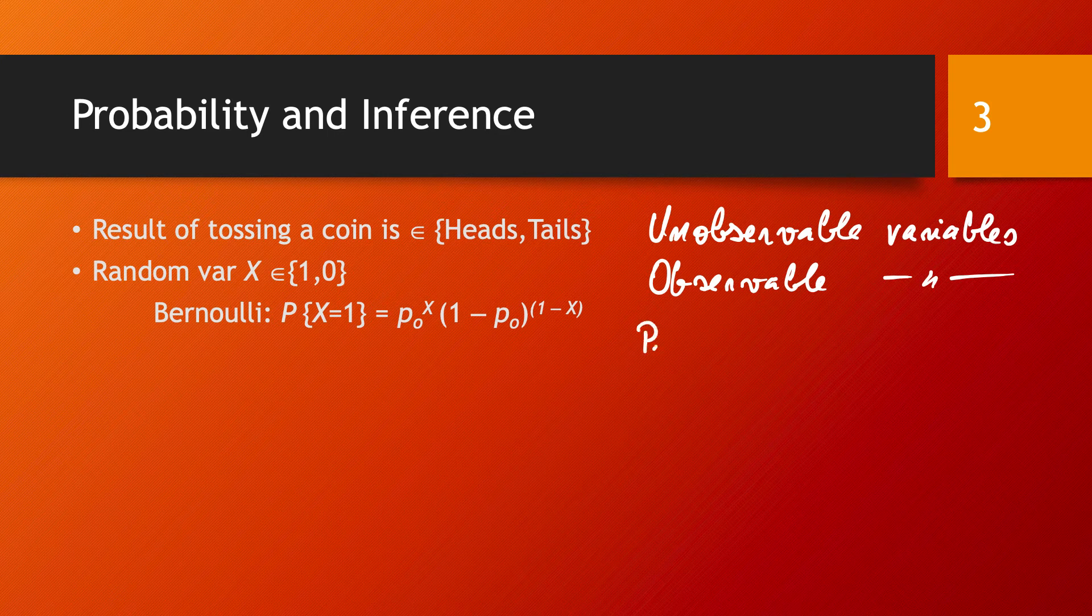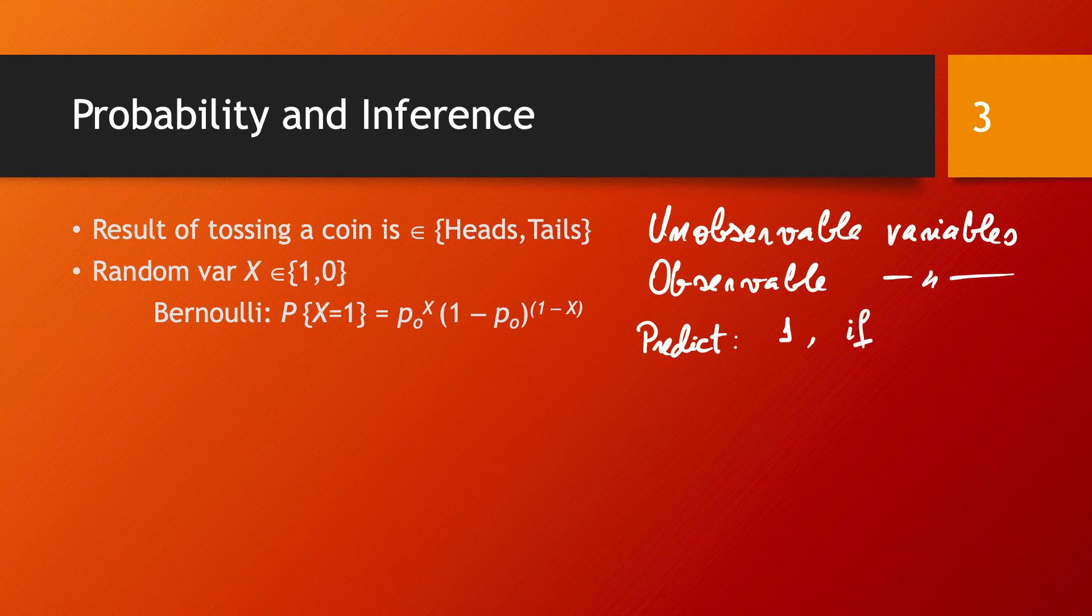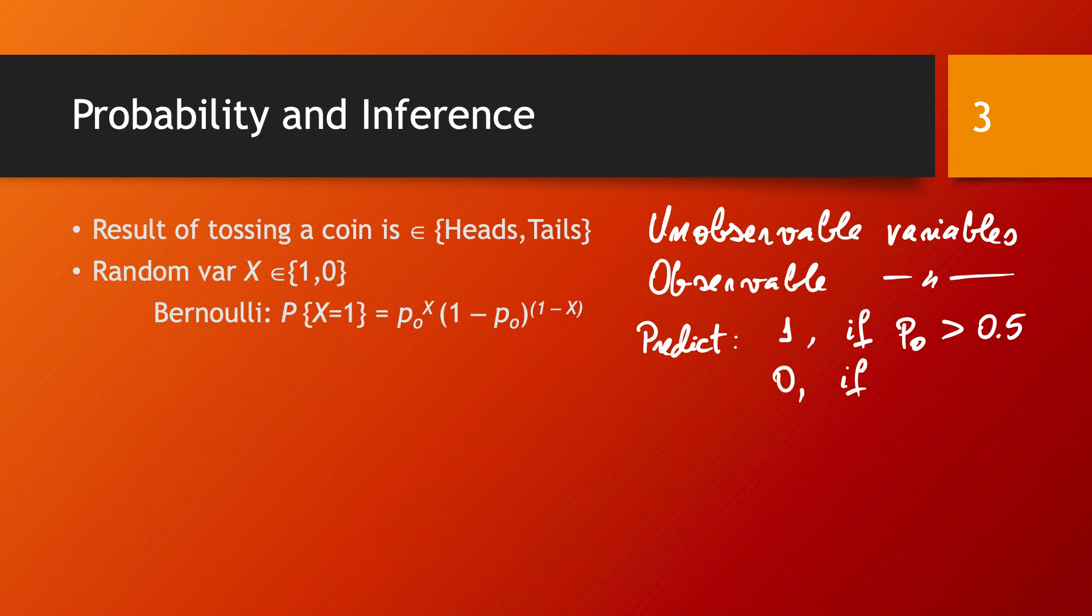We predict 1 if P0 is larger than 0.5, and predict 0 if P0 is smaller than 0.5.